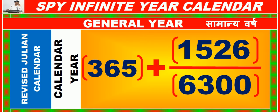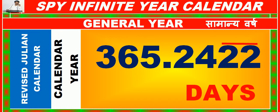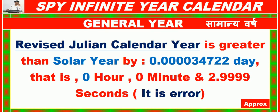Average Revised Julian Calendar year = 365 + 1526/6300 = 365.2422 days = 365 days, 5 hours, 48 minutes, and 47.9999 seconds. The Revised Julian Calendar year is greater than the solar year by 0.00003472 day, that is approximately 3 seconds (this is the error).